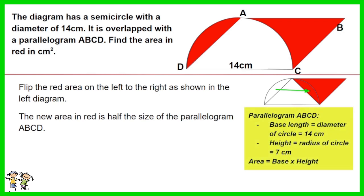Parallelogram ABCD has a base length which is the diameter of the circle, 14 cm, and height equal to the radius of the circle, 7 cm.